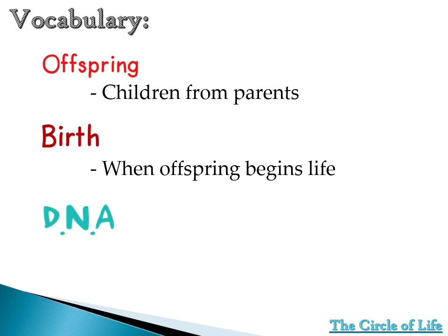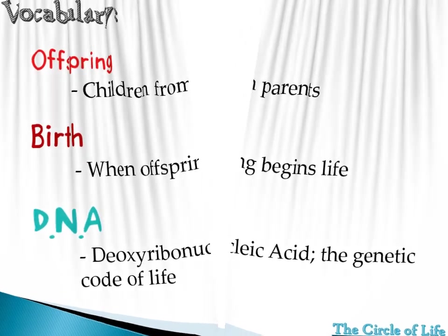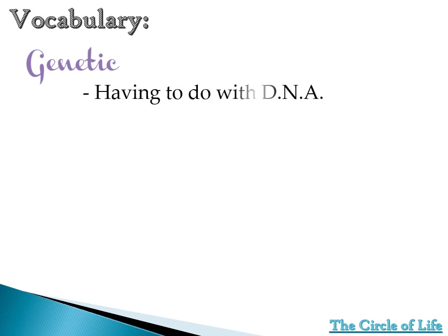Third, we have DNA. DNA stands for deoxyribonucleic acid. It's a genetic code of life. Each living thing has a unique and different DNA. Fourth word is genetic. The meaning of genetic — it is something to do with DNA, or it is related to DNA. Again, DNA stands for deoxyribonucleic acid.